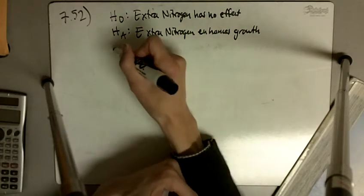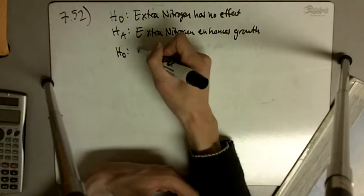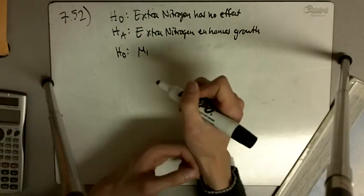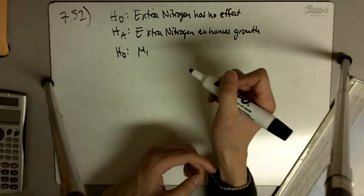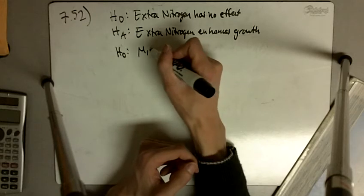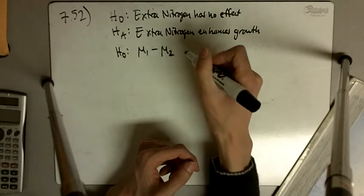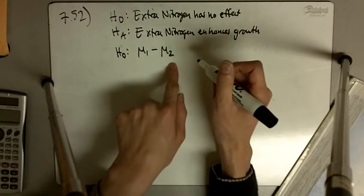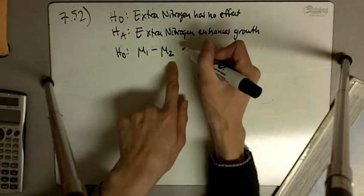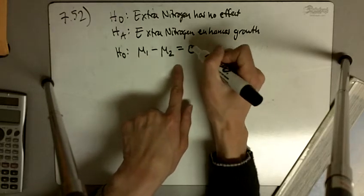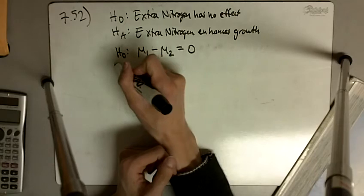In math terms, our null hypothesis is, we're going to say mu1 is the standard group, so mu1 minus mu2 equals zero, there's no difference there, that's the null hypothesis.